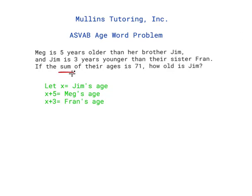When I see the word 'sum,' that tells me that I'm going to be adding. So let's look at the information we've been given in the problem. We're trying to solve for Jim's age. The first thing we're going to do is let x be equal to Jim's age. We know that Meg is five years older than Jim, so x plus 5 is equal to Meg's age. And Jim is three years younger than his sister Fran, so Fran's age is x plus 3. Now that we have this information, we know that this all equals 71.